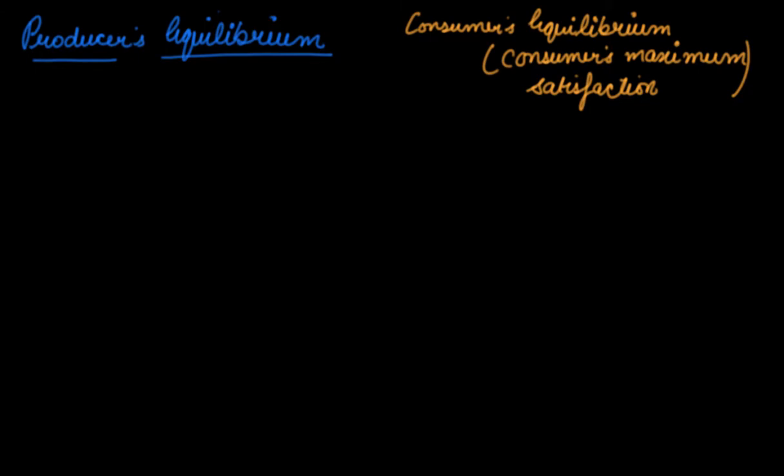Why does a producer produce? To earn profit. So producer equilibrium is a situation in which he maximizes his profit.